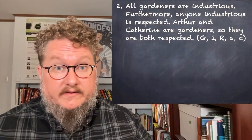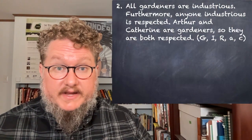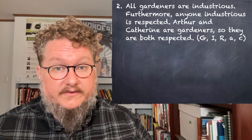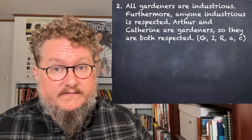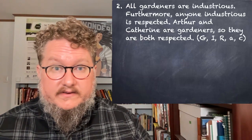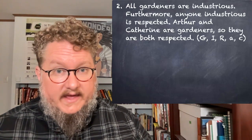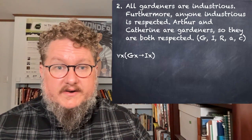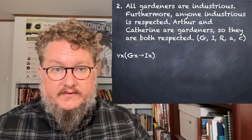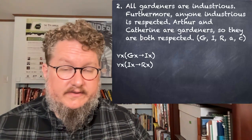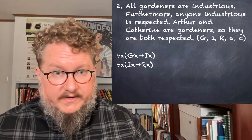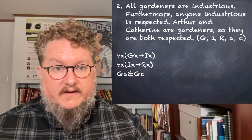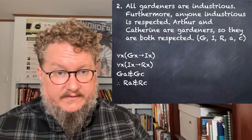Let's move on to our second argument. All gardeners are industrious. Furthermore, anyone industrious is respected. Arthur and Catherine are gardeners, so they are both respected. I'm using G for gardeners, I for industrious, R for respected, lowercase a for Arthur, lowercase c for Catherine. All gardeners are industrious — that's a straightforward universal. So is anyone industrious is respected — that is, all industrious ones are respected ones. Arthur's a gardener and Catherine's a gardener: GA and GC. Therefore, Arthur is respected and Catherine is respected.